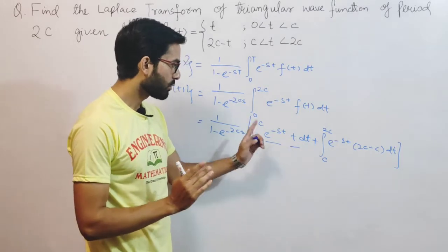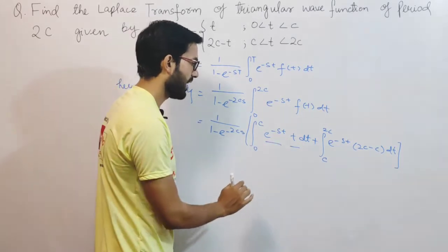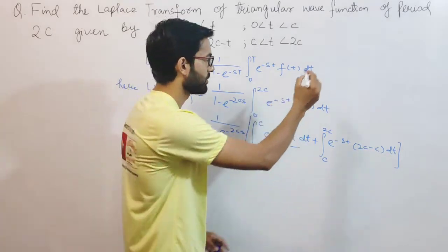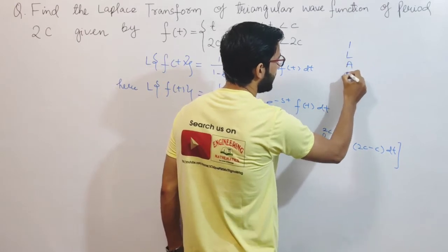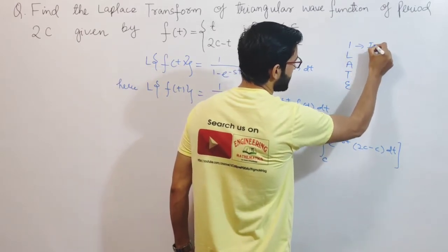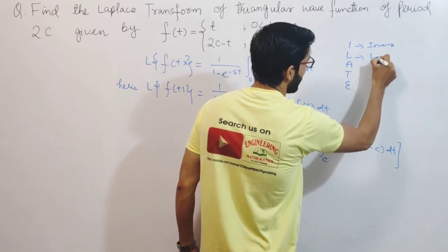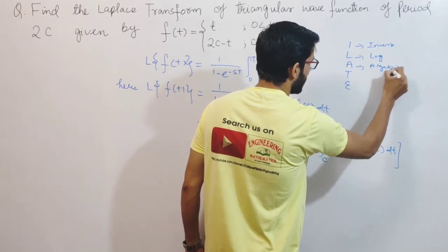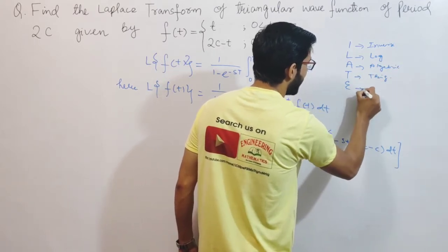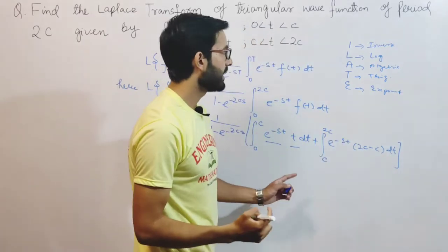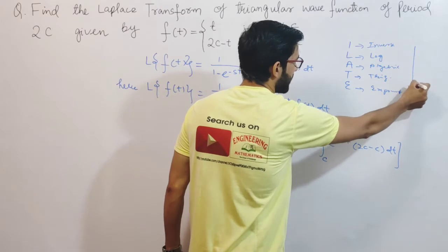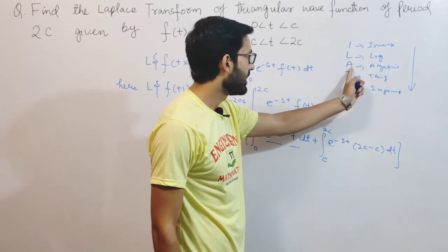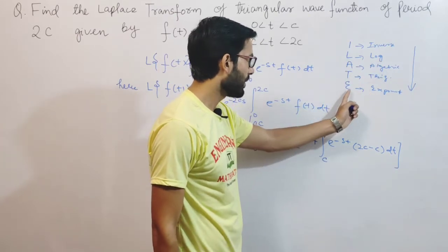To evaluate these integrals, I will use integration by parts. First, let me explain how to identify u and v using the ILATE rule. ILATE stands for: I — Inverse trigonometric, L — Logarithmic, A — Algebraic, T — Trigonometric, and E — Exponential. The function that appears first in this order is chosen as u, and the other as v.